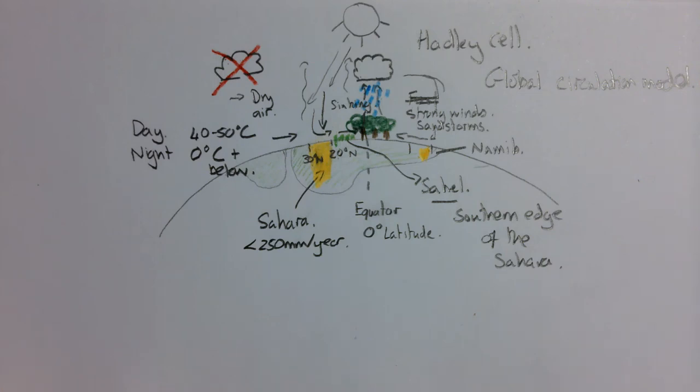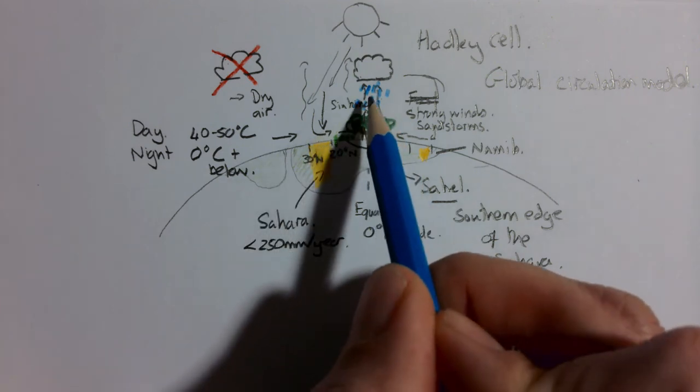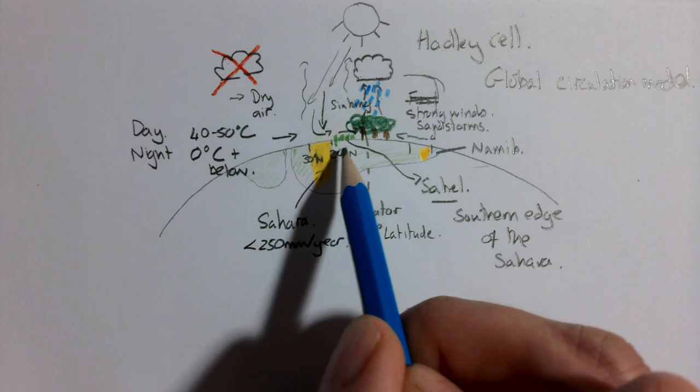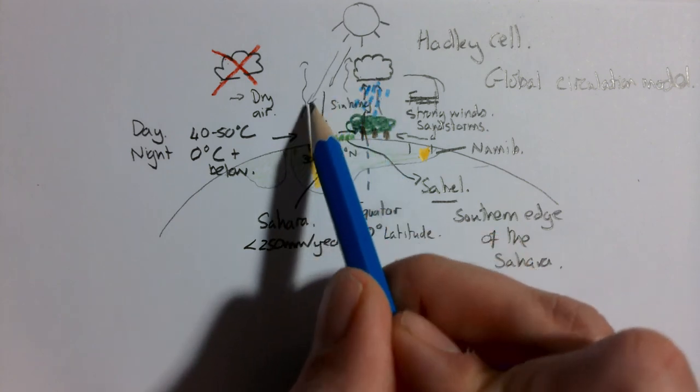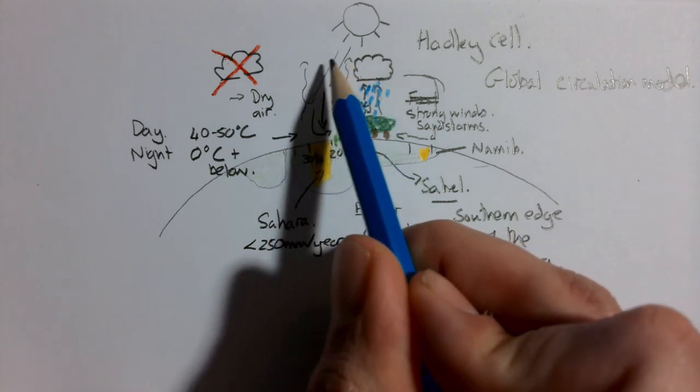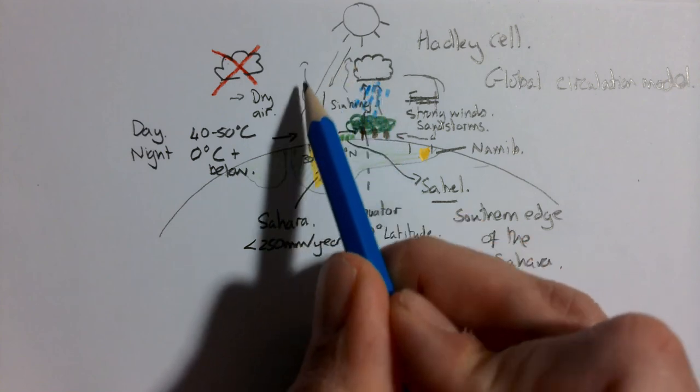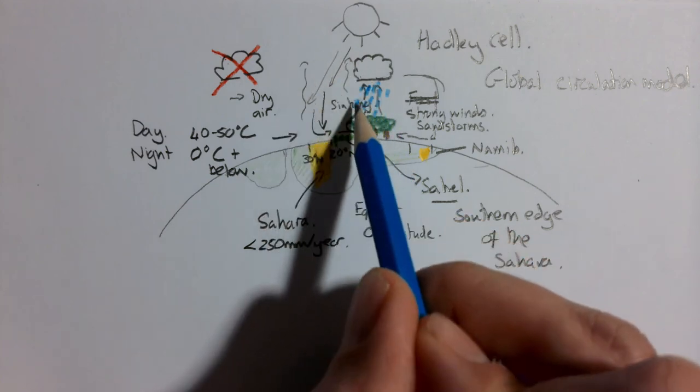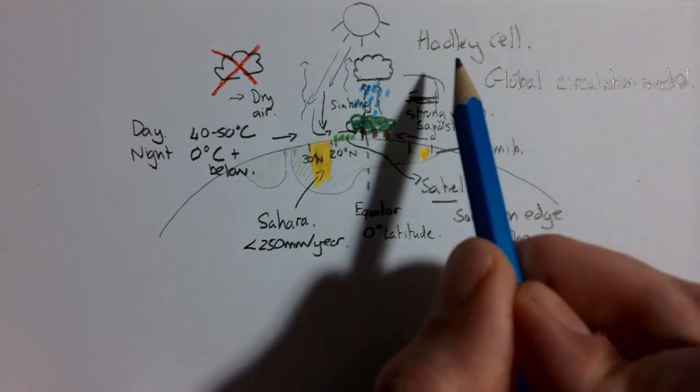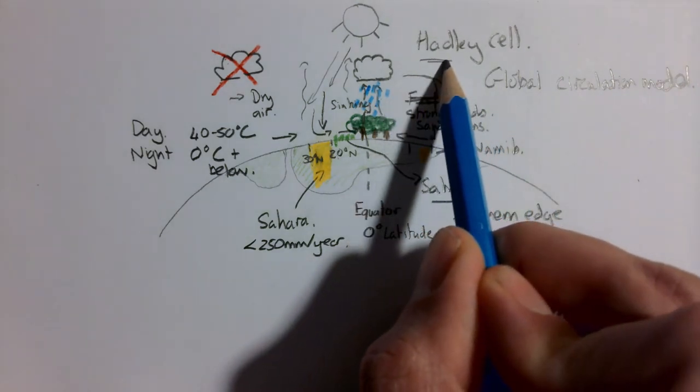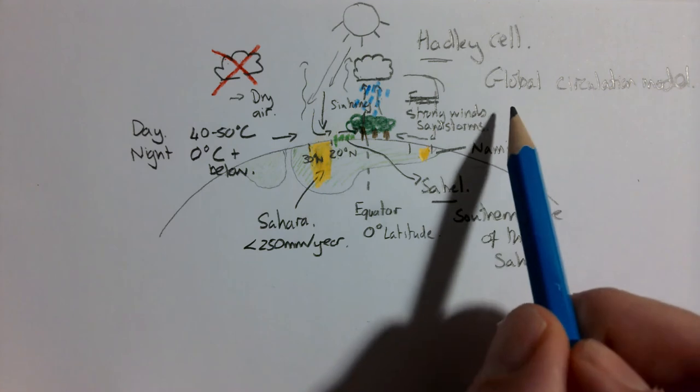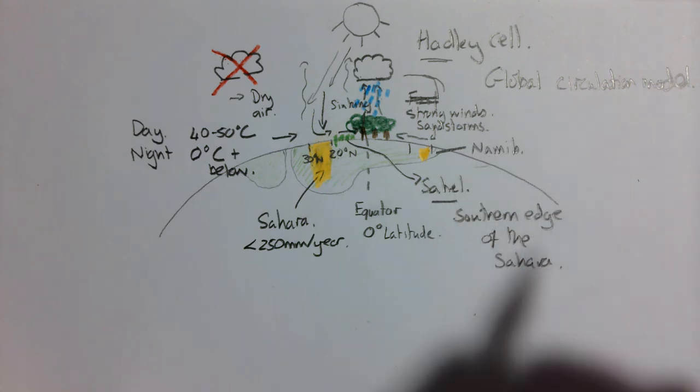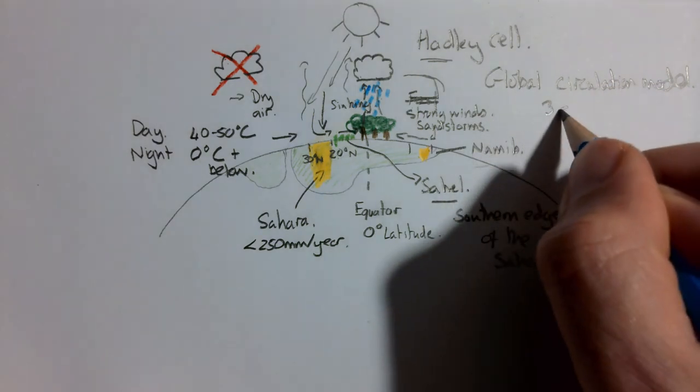Finally, what do we call the circulation of air from the equator round, down over hot deserts and back round again? What is the name that we give to that circulation of air? Yes, that is the Hadley cell. And it is part of the Greater Global Circulation Model, which has three cells.